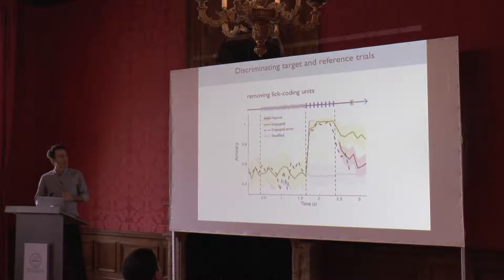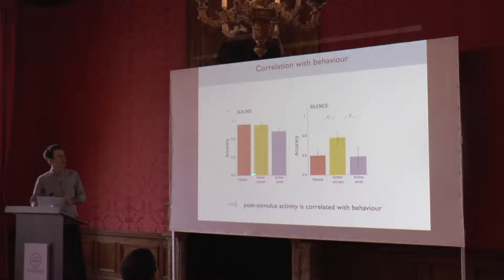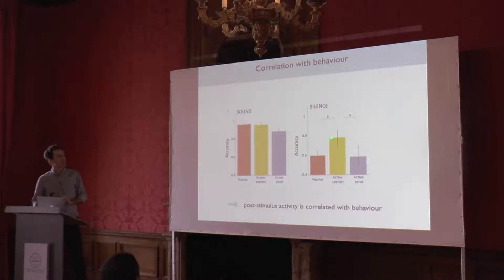This activity in the auditory cortex is not purely sensory because the stimulus is not there anymore, and it's also not purely motor because we removed lick-related, potentially motor activity — so this is something in between. This suggests there is some decision-related activity in the auditory cortex. All that I showed was on correct trials. We can do the decoding also on error trials, and we get a result showing that during the stimulus we can still decode quite well on error trials, but after the stimulus the information in error trials goes back down to the passive level. So during sound we can decode in both active passive and active error trials, but during the silence after the stimulus it's only on active correct trials that we can distinguish the behavioral meaning of the stimuli from the activity.